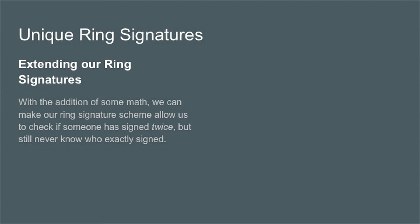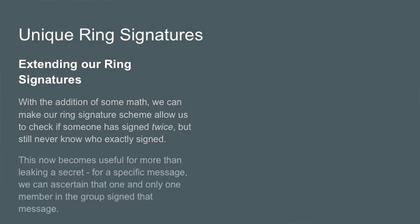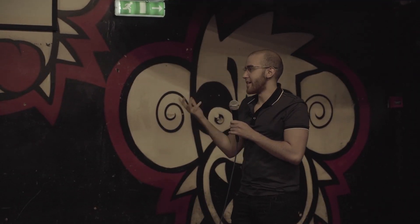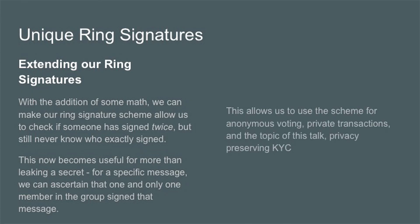By adding some additional math, we can make our ring signature scheme allow us to check if somebody has signed twice, but still never know exactly who signed. This means we can ascertain that one and only one member in the group signed a message, using a signing tag that relies on the discrete logarithm problem. This allows the scheme to be used for anonymous voting, private transactions, and — the topic of this talk — privacy-preserving Know Your Customer.